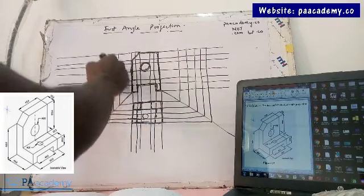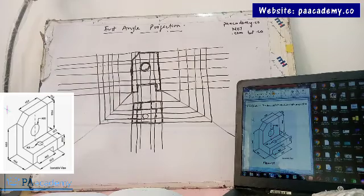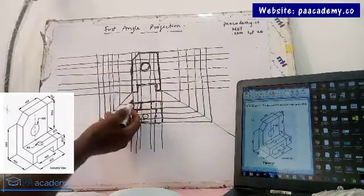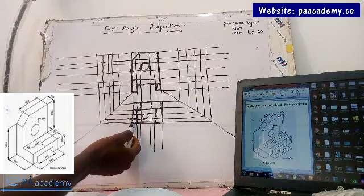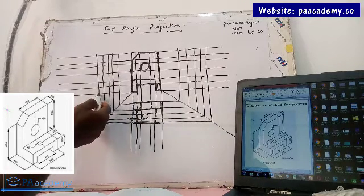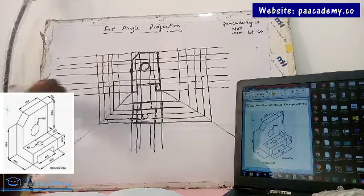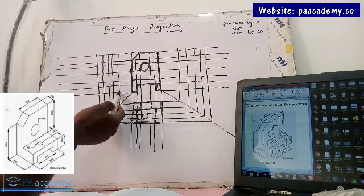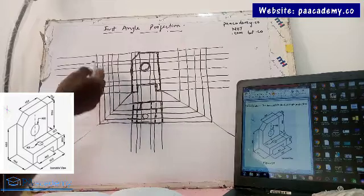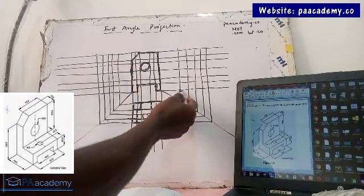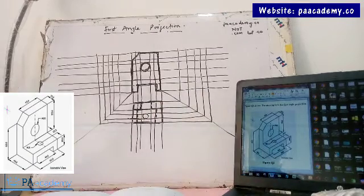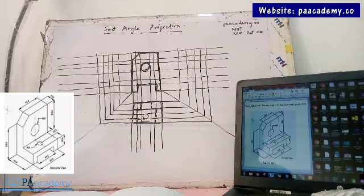So if your projections are correct and your lines are parallel, the length from this point to this point — which is given as 40 — you are going to be having the same 40 from here to here without even measuring it. After you have done your projection and you introduce your ruler to check, you should be having 40 from this point, and also 40 from here to here. So if you are not getting 40 — if you are getting 42, 43, 45 or more — just know that your lines are not parallel. So you have to pay attention to that.